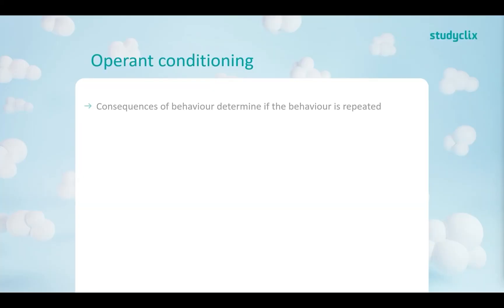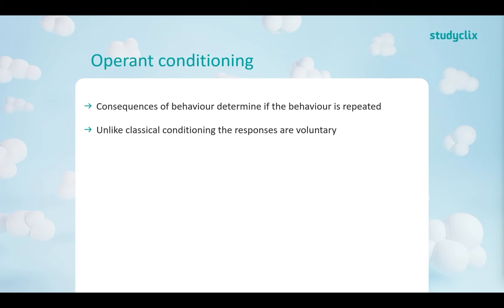Operant conditioning is based on the premise that consequences of behavior determine if it is repeated. Unlike classical conditioning, which focuses on involuntary, automatic, and unconscious responses, operant conditioning is voluntary and conscious. Consequences determine whether a behavior is repeated, modified, or not performed at all.